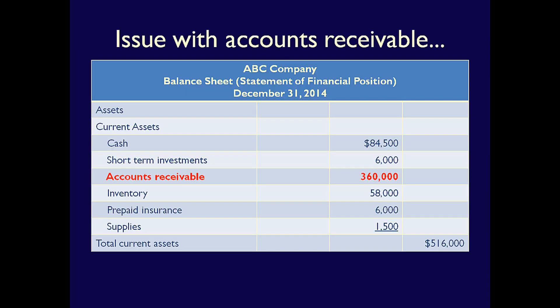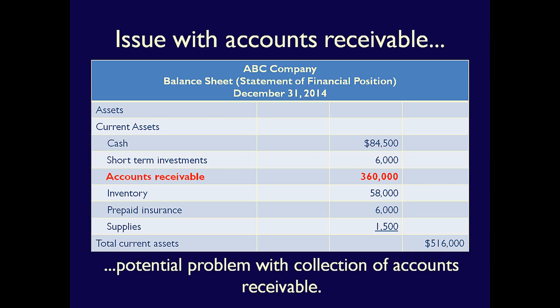Let's assume we're back at December 31, 2014. Our accounts receivable are $360,000 on the balance sheet. We know that when we sell on credit, there will always be a problem with collections. Some of our customers will never pay. The more we sell on credit, the greater the risk that there will be a problem with collections.